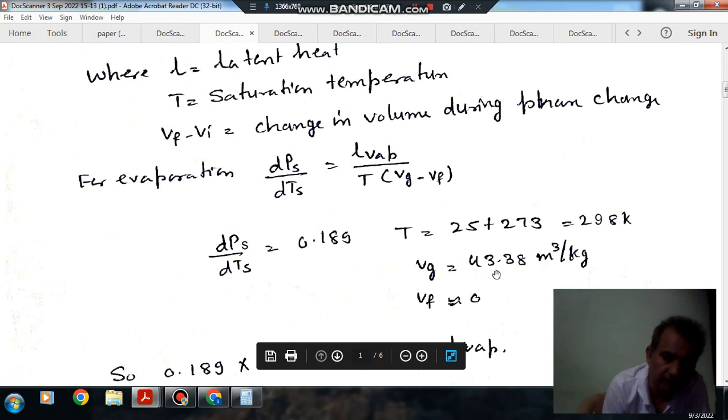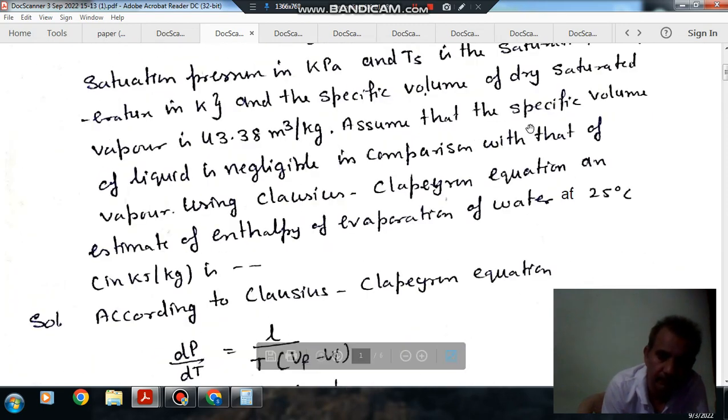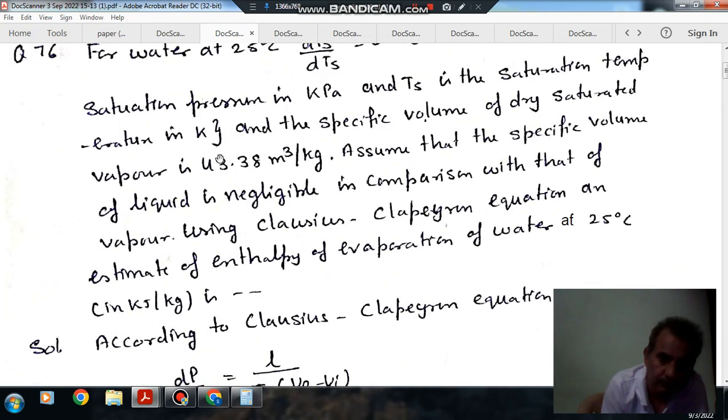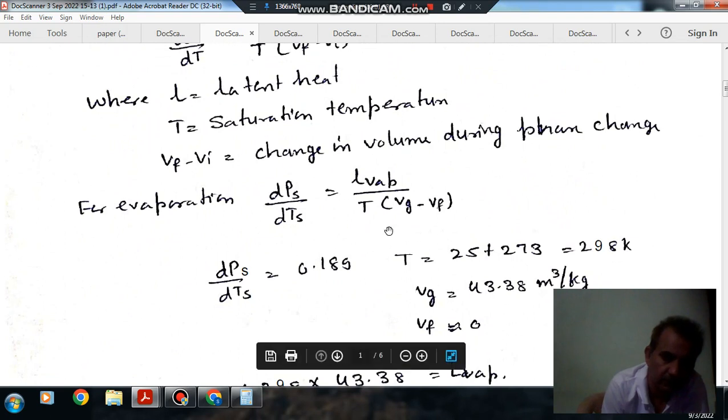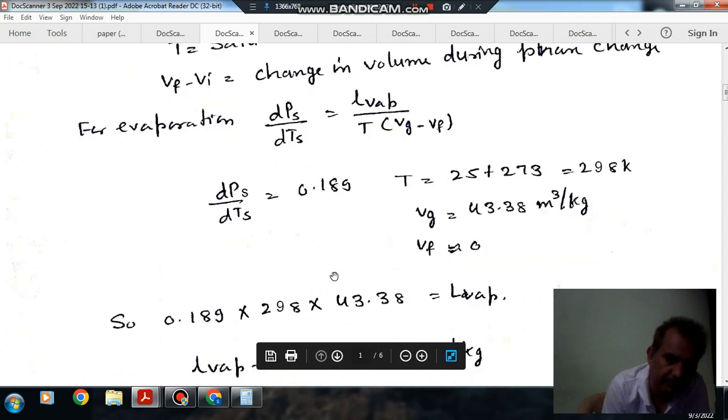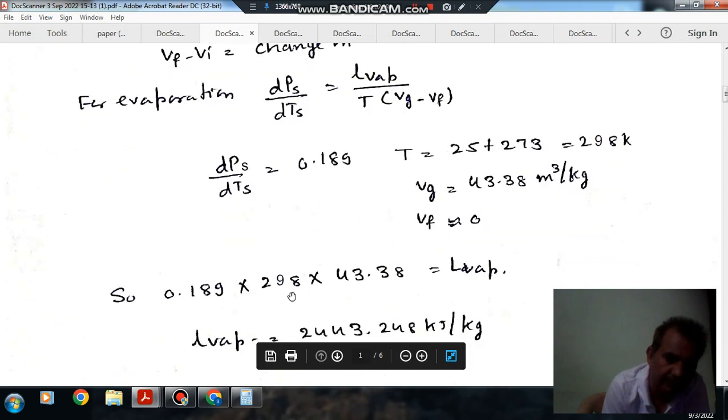Vapor volume is given as 43.38 and the specific volume of the liquid is negligible so that is 0. T is the temperature, that is 25 plus 273 equals 298 Kelvin. And dP/dT is given as 0.189, so 0.189 times 298 times 43.38...